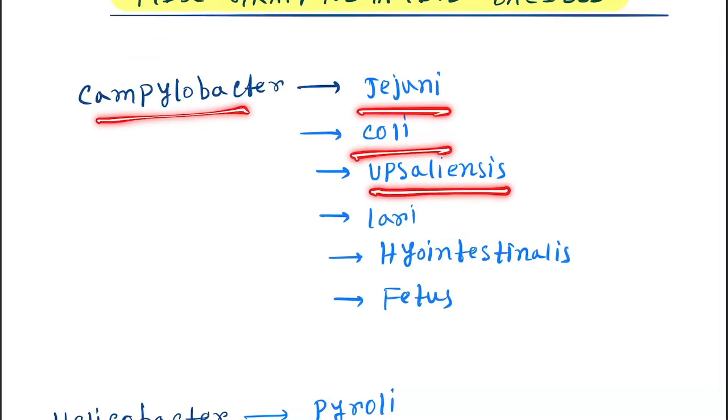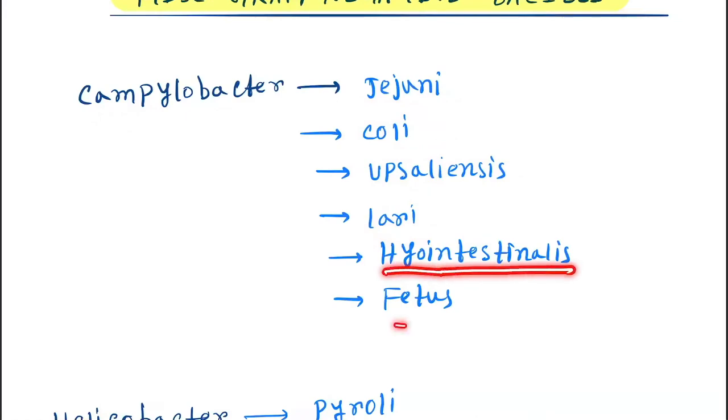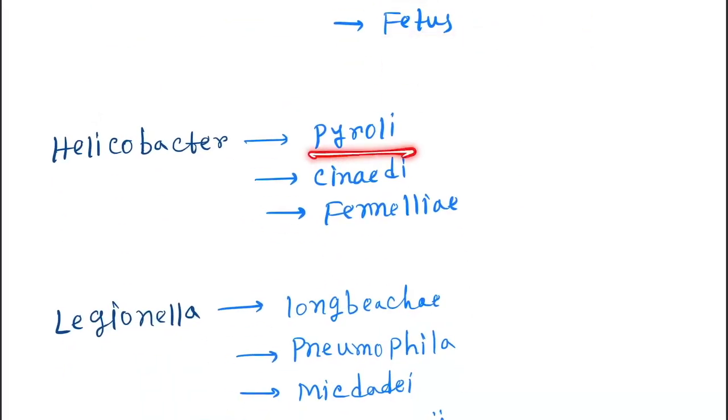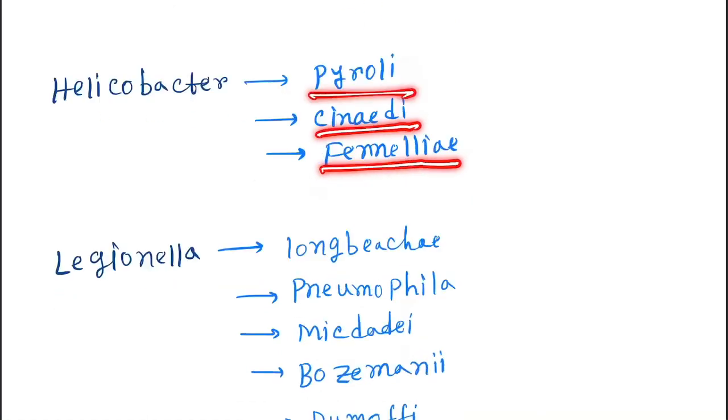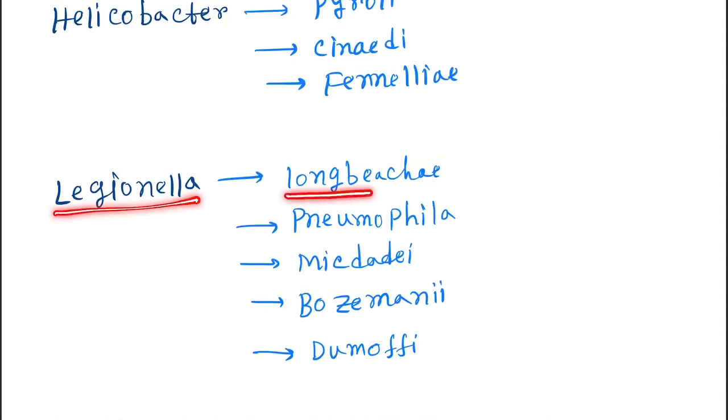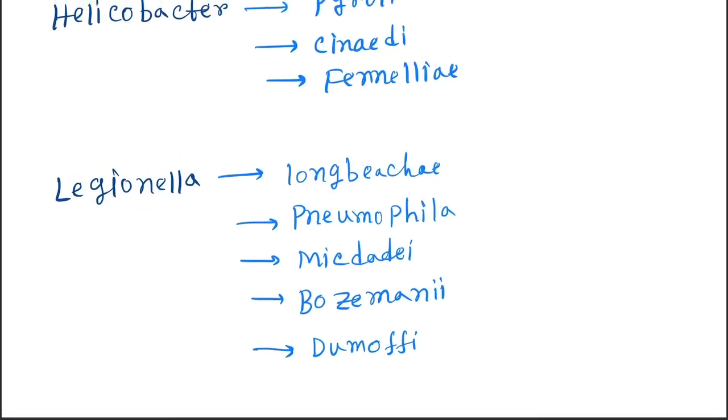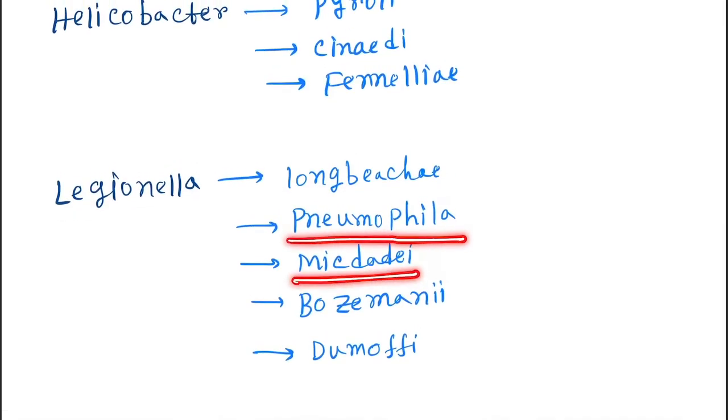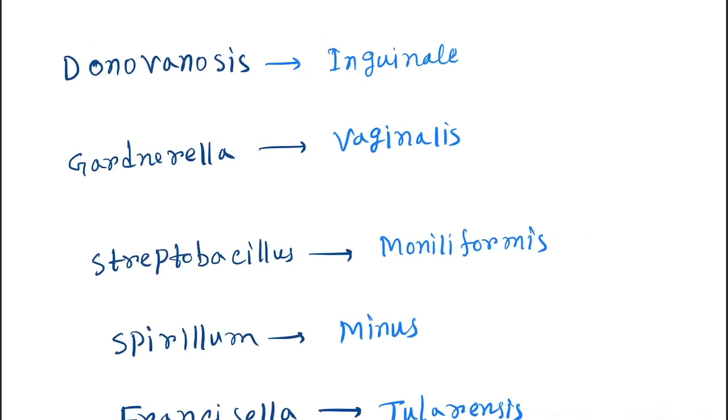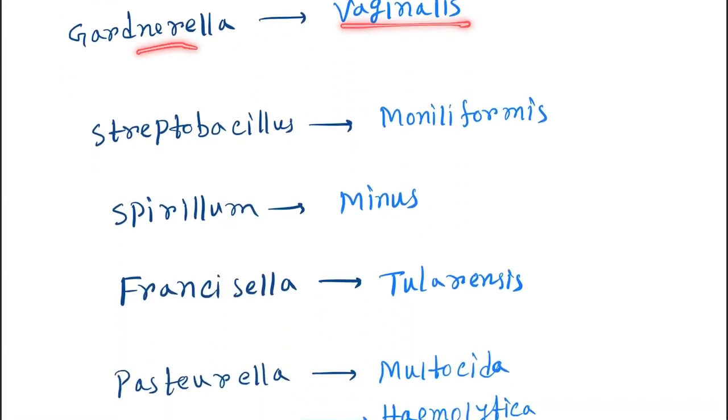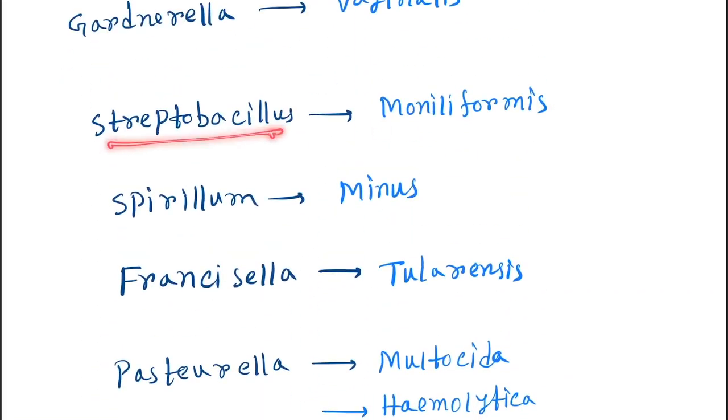Now come to miscellaneous gram negative bacteria. Here Campylobacter jejuni, coli, upsaliensis, lari or hyointestinalis, fetus, and Helicobacter pylori, cinaedi, and fennelliae. Next is Legionella longbeachae, pneumophila, micdadei, bozemanii, and dumoffii.